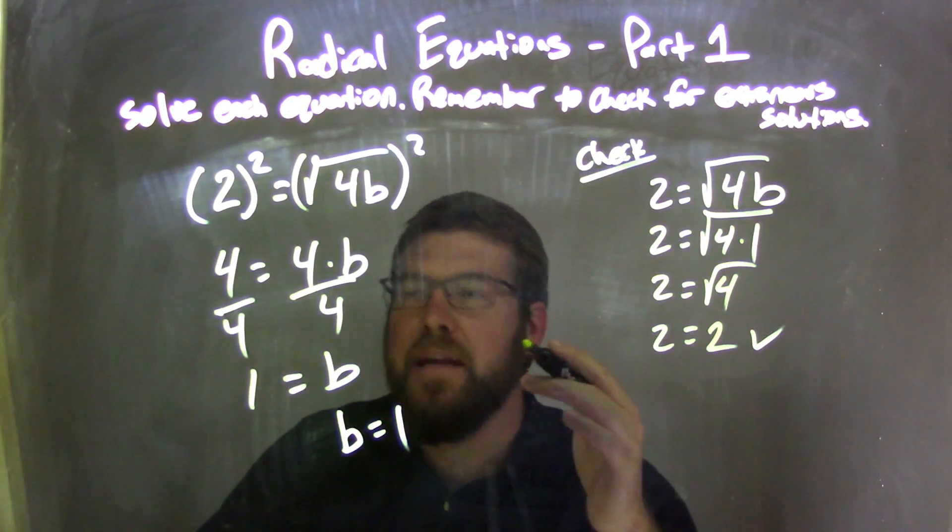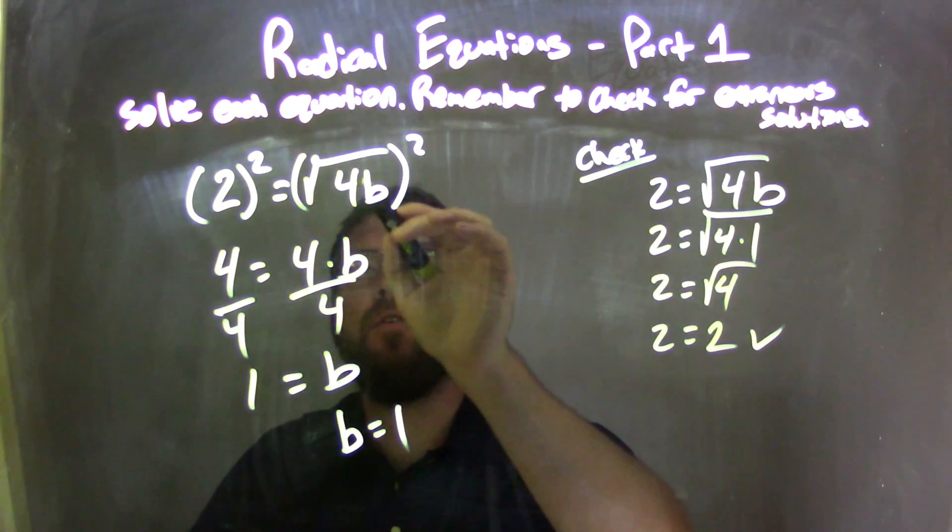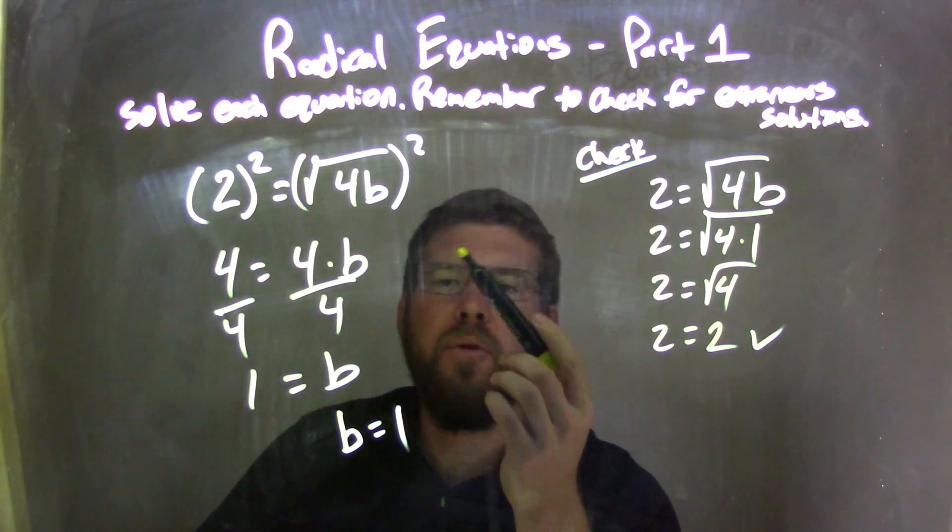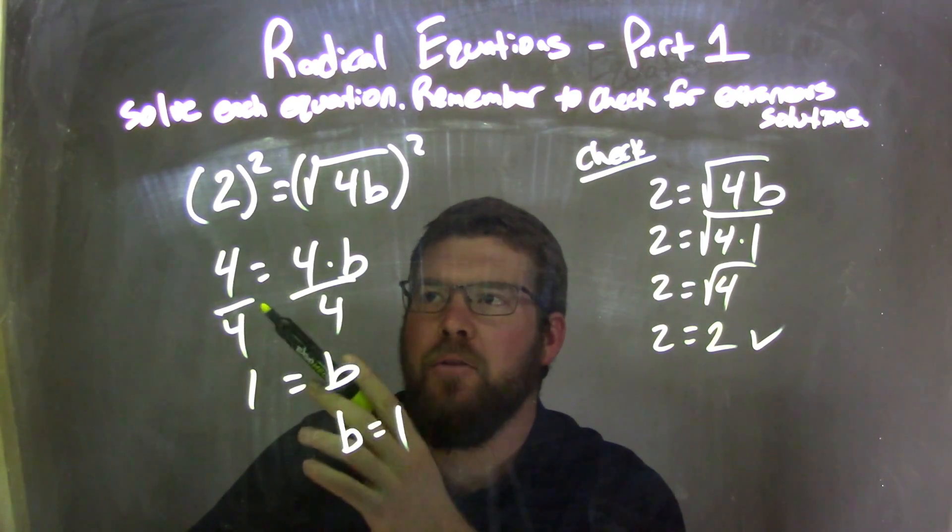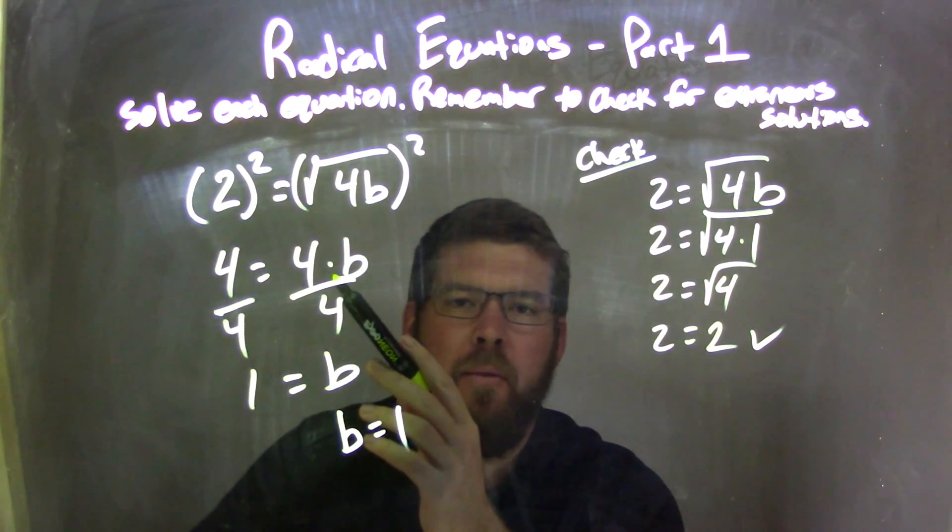So let's recap. 2 equals the square root of 4 times b. I'm going to eliminate the square root. I squared both sides. Then, in doing so, I was left with 4 on the left equals 4b on the right.